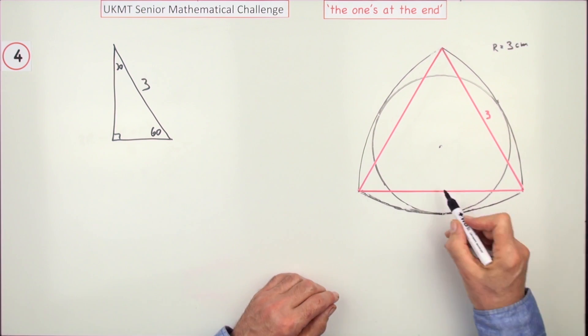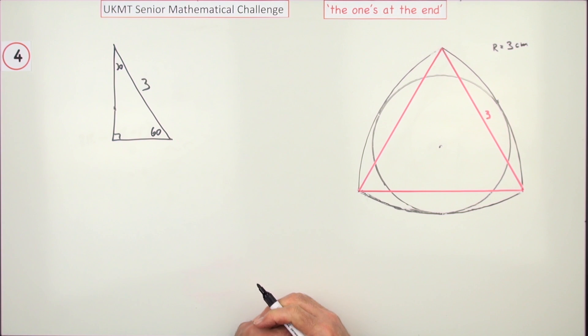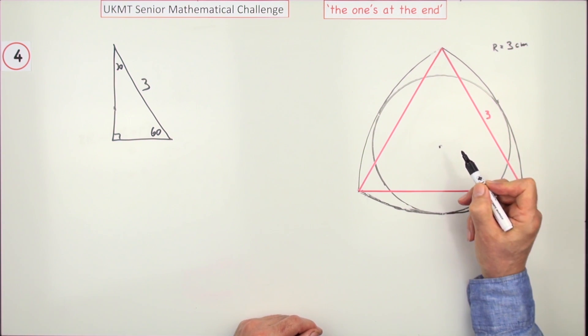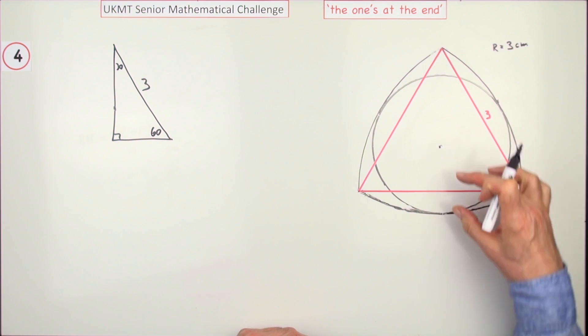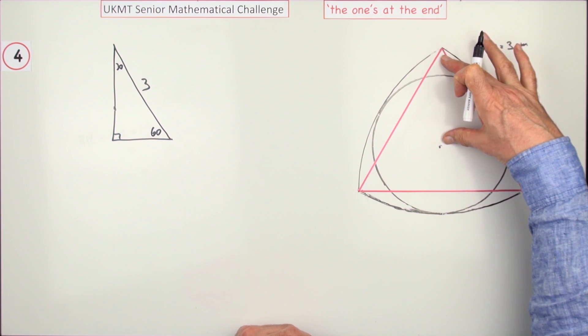Knowing that would then let you find this distance. Knowing that that's a third of the way up lets you find this part - that's two-thirds of the way up. Of course, the radius will be the balance of that.